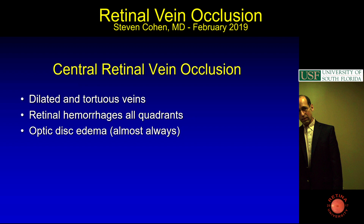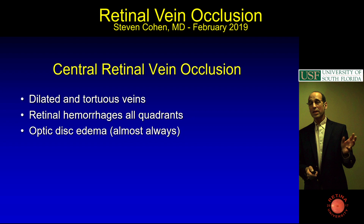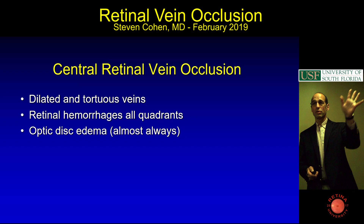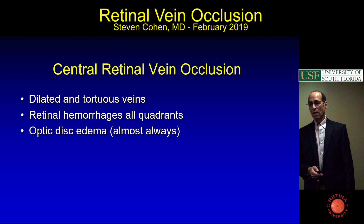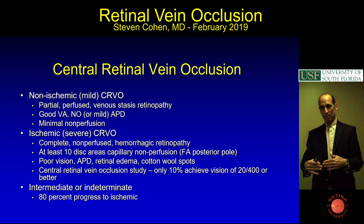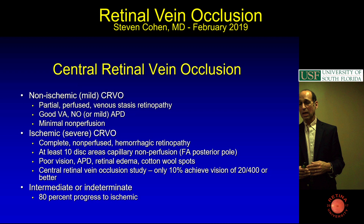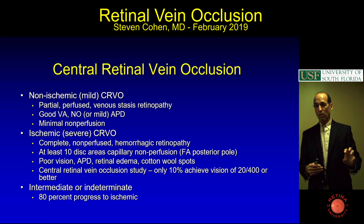Central vein occlusion presents with dilated veins in all quadrants, retinal hemorrhage in all quadrants, and they always have optic disc edema. Sometimes people are sent in with ischemic optic neuropathy and you want to know if it's a vein occlusion. For a vein occlusion, you have to have hemorrhage pretty far out; ischemic optic neuropathy is usually just around the nerve. Non-ischemic CVO: good vision, no APD or mild APD. Ischemic CVO: at least 10 disc areas non-perfused, APD, and poor vision.